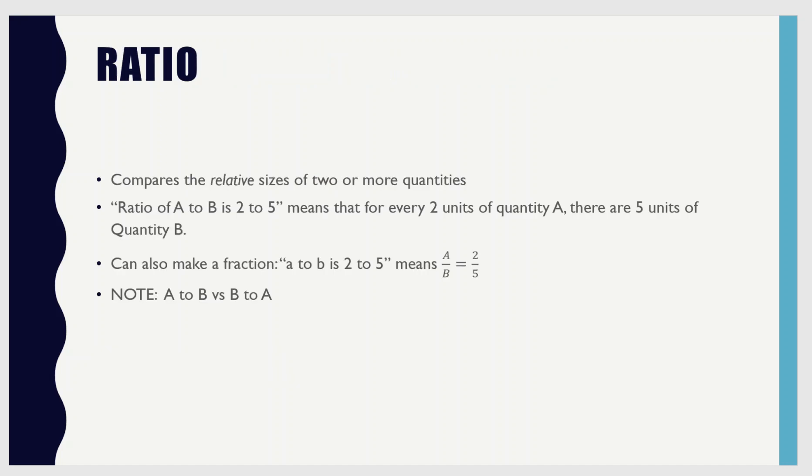On this slide we've got the definition of a ratio. What it does is it compares the relative size of two or more quantities. The way we usually say this is that the ratio of a to b is two to five — whatever the numbers are. What that means is that when you have two units of the first quantity, you have five units of the second quantity. You can also turn this into a fraction, so a to b would be written as a over b, and two to five would go the same way.